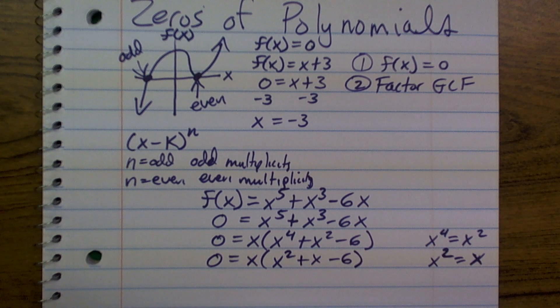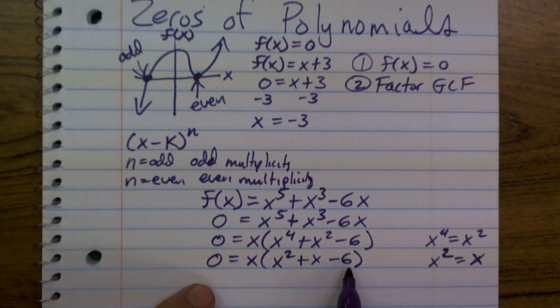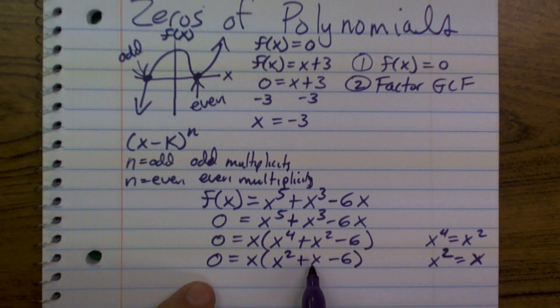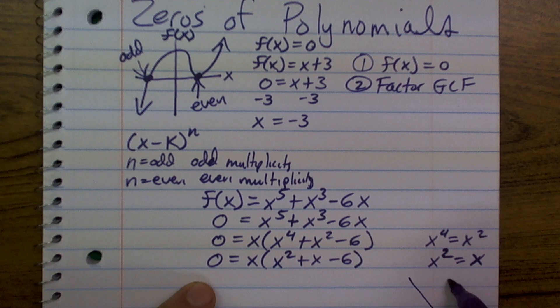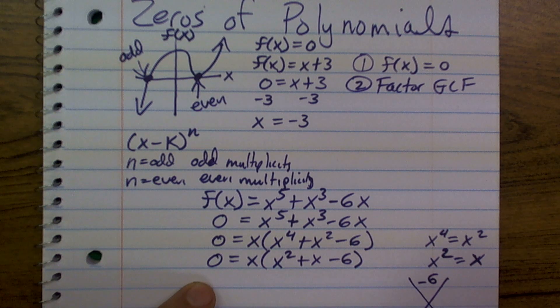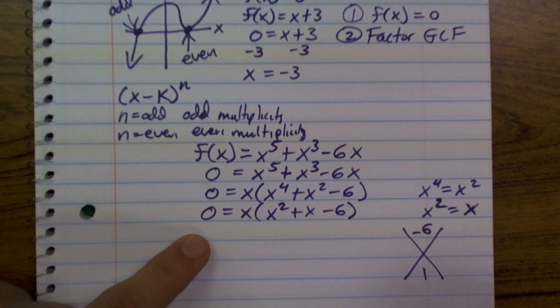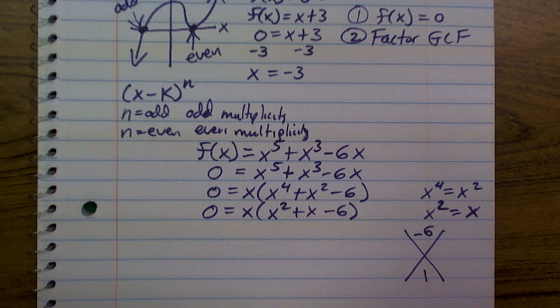Now, what I can do is I can use a trinomial factoring technique where I can say what two numbers are going to multiply to give me negative 6 but then add to give me my b which is 1. So, I can write it like this sometimes, negative 6 and 1. So, what two numbers multiply to give me negative 6 but then add to give me 1?